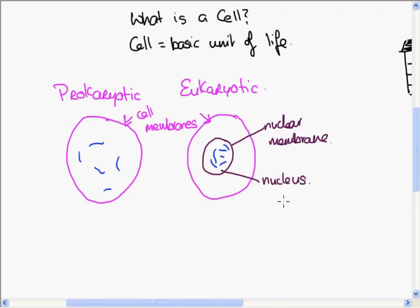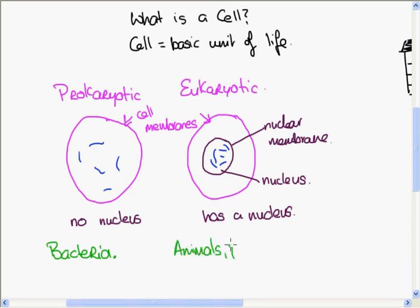Okay, now, so no nucleus here in the prokaryotic, has a nucleus in the eukaryotic. Prokaryotic cells are bacteria, at least for the purpose of biology. The only cells that are prokaryotic are bacteria, whereas the cells that are eukaryotic are animals, plants and everything else, really.